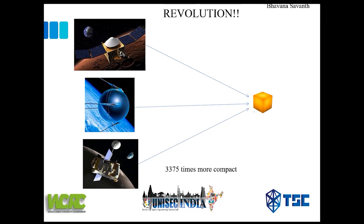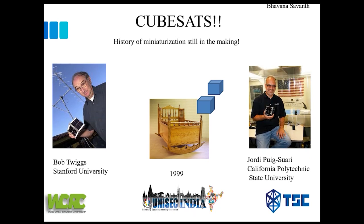While huge masses of satellites were pushed into orbits, time called for a revolution. Can you imagine crushing a satellite down nearly 3,375 times and yet obtaining your desired result? Here's a new chapter. To mark the inception of a new space era, Bob Twiggs of Stanford University, with Jody Pug of California Polytechnic State University, cradled the idea of CubeSats in 1999. This was a mission driven to promote and develop the skills necessary for designing, manufacturing, and testing of small satellites in low-Earth orbits.